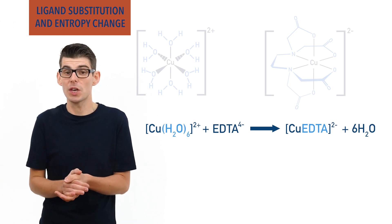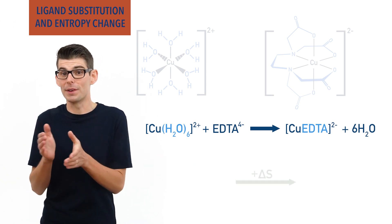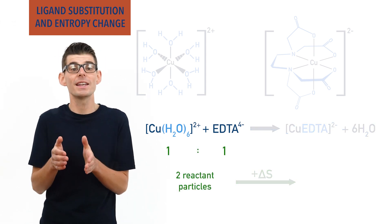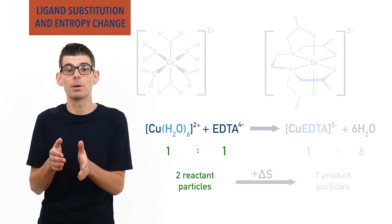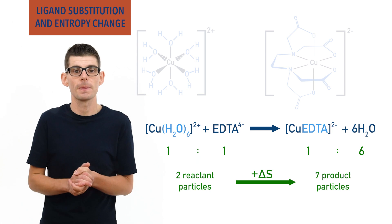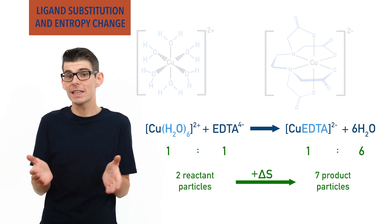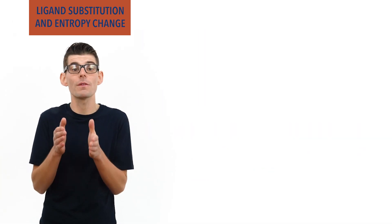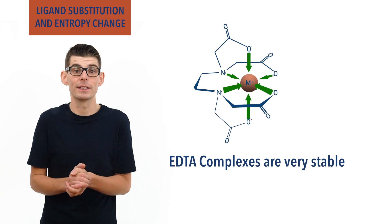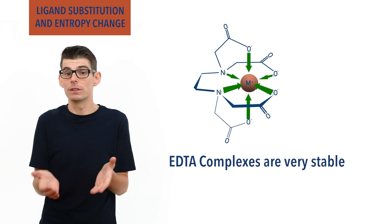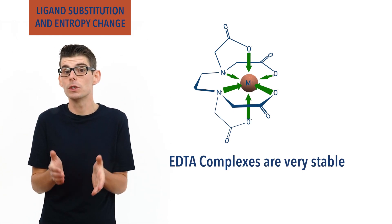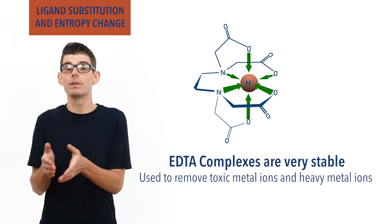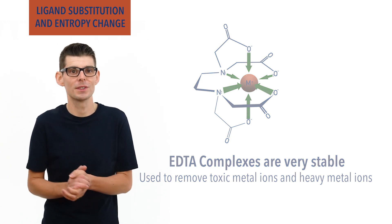For example, [Cu(H₂O)₆]²⁺ can undergo ligand substitution with EDTA⁴⁻, releasing six water molecules in the process. The entropy change, delta S, is very large — two particles at the start end up as seven particles at the end. This chelate effect means complexes of EDTA are very stable and unreactive. As a result, EDTA is often used to help remove toxic metal ions and heavy metal ions from solutions.